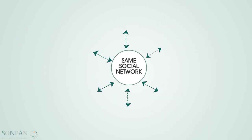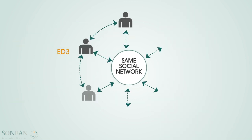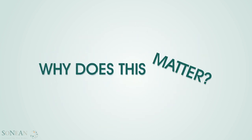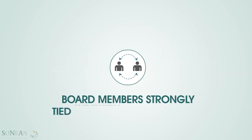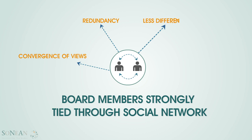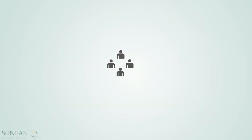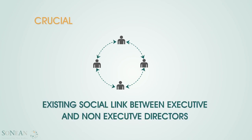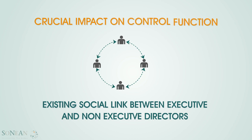By the same measure, it will become clear that the other three directors are also closely linked to the next three non-executive directors through the same social networks. The strong historical ties between key decision makers may lead to convergence of views, redundancy, less differentiation, and eventually less innovation. Also worth mentioning is that the strong bonds between the executive and non-executive directors can have a crucial impact on essential control functions.